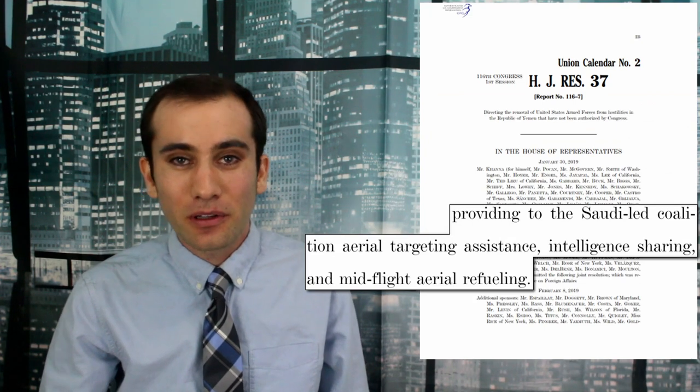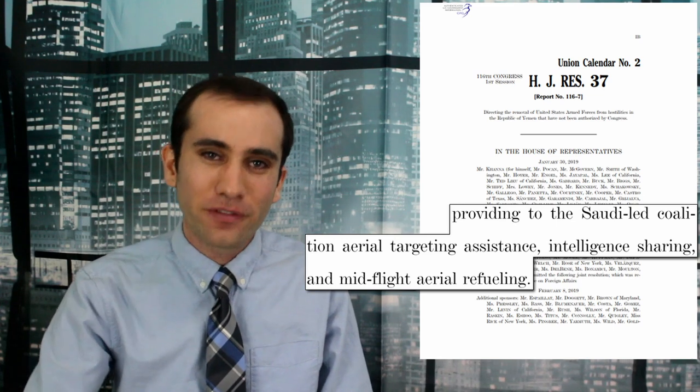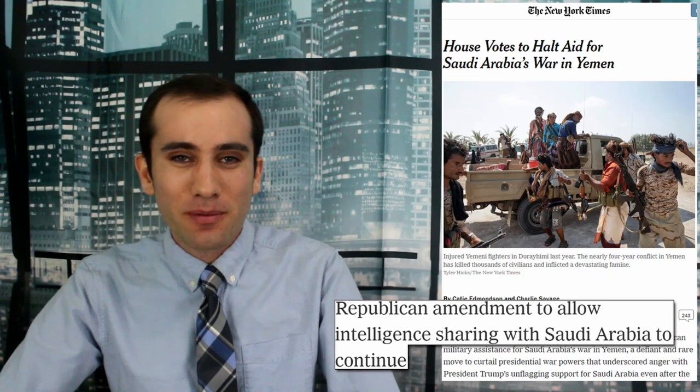The bill emphasizes that America is providing to the Saudi-led coalition aerial targeting assistance, intelligence sharing, and mid-flight aerial refueling. Although, since November 10th, the United States announced we were no longer doing mid-flight aerial refueling. So this leaves us with sharing intelligence and providing aerial targeting assistance — except there was a Republican amendment to allow intelligence sharing with Saudi Arabia to continue. So America will stand firmly against this war by no longer providing aerial targeting assistance.